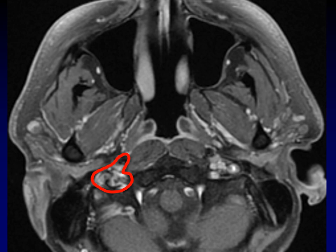Coming out lateral to those prevertebral muscles, we have a circle of vascular structures — this is the neurovascular space, or carotid space, where the internal carotid artery, the jugular vein, the vagus nerve, and the ninth and eleventh cranial nerves are coming through. These arrows are pointing to a bony structure, the clivus, which is the boundary between the intracranial vault and the nasopharynx.